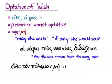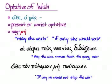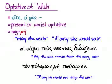Another example: eithe ton polemon mē pauoimen. This time we have the present optative and the introductory word eithe again, so this one means 'if only we would not stop the war.' It would mean the same thing with ei gar, and it means the same thing without any introductory word at all — ton polemon mē pauoimen, 'if only we would not stop the war.' So that's optative of wish.